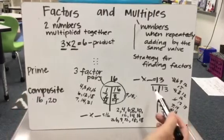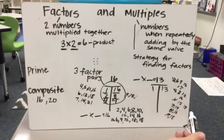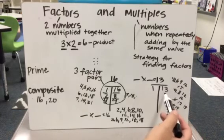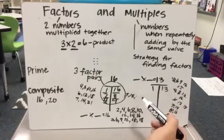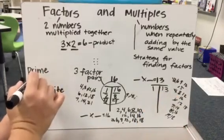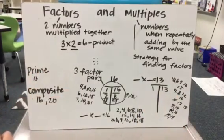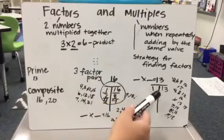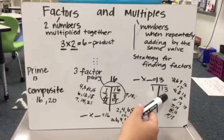What I'm realizing is that it has no other factors except 1 and 13. So 13 is called a prime number. That means the only factor pairs it has is 1 and itself. It has no other factor pairs.